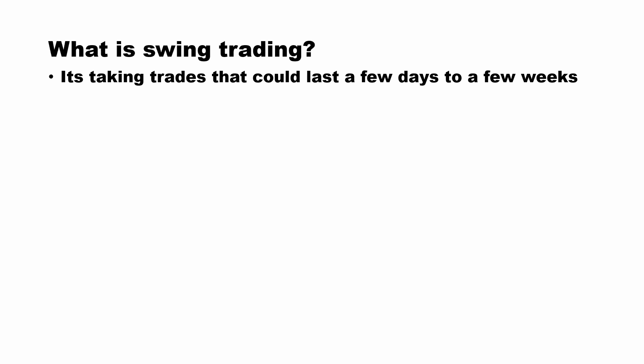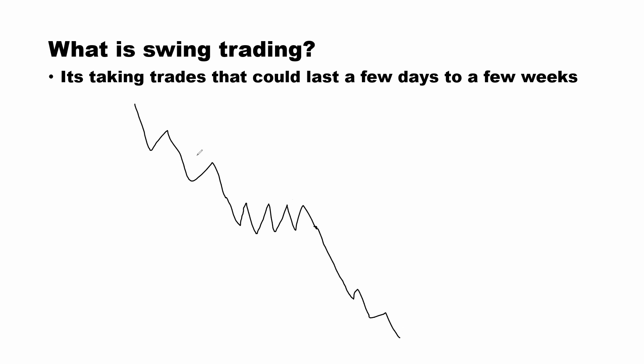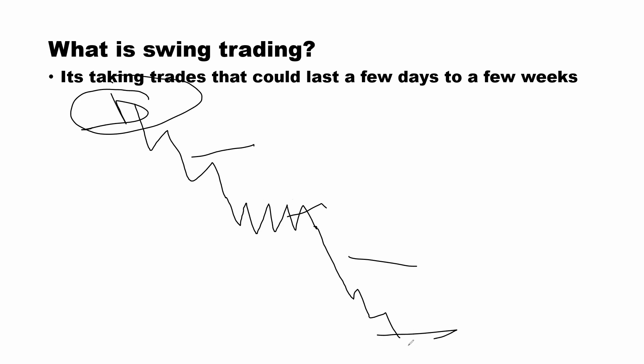Let's start by defining what swing trading is. Swing trading is simply when you take a trade that could last a few days or a few weeks. Some swing trades last a few days because fundamental factors have pushed them quickly; others last a few weeks because the market has been slow. The market has three phases: progression, ranging, and progression again — also called distribution and accumulation.